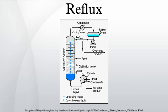Inside the column, the downflowing reflux liquid provides cooling and condensation of the upflowing vapors, thereby increasing the efficiency of the distillation column. The more reflux provided for a given number of theoretical plates, the better is the column's separation of lower boiling materials from higher boiling materials. Conversely, for a given desired separation, the more reflux is provided, the fewer theoretical plates are required.